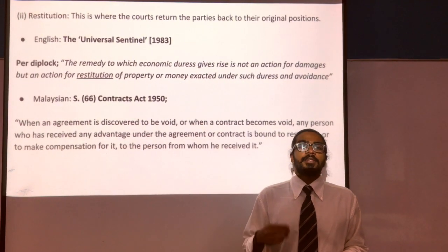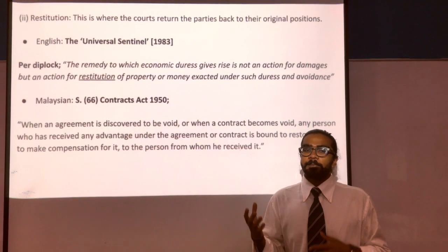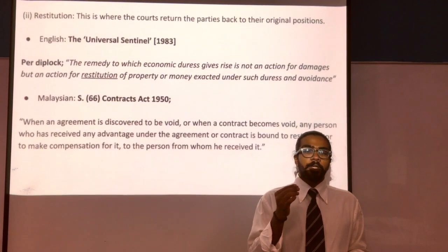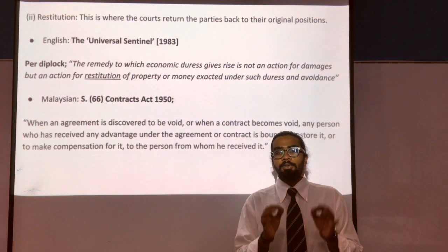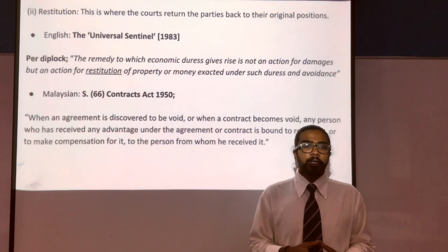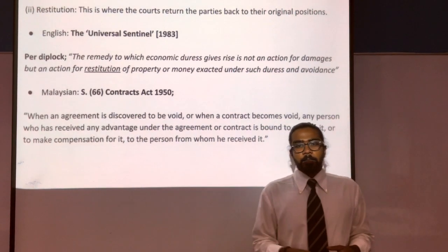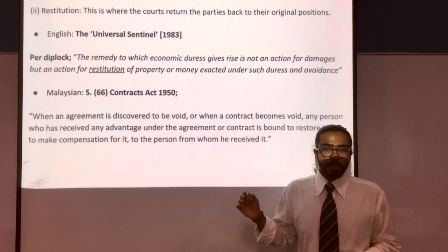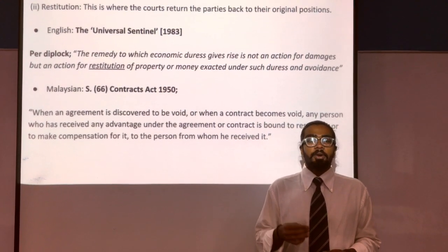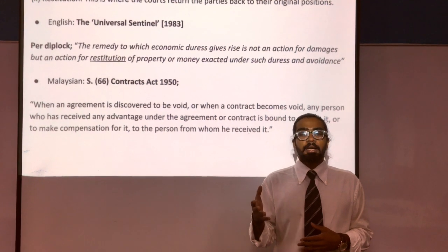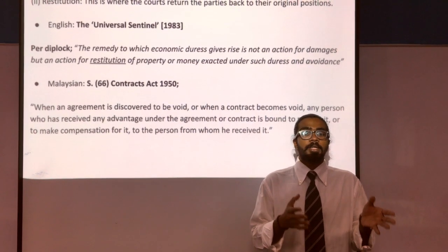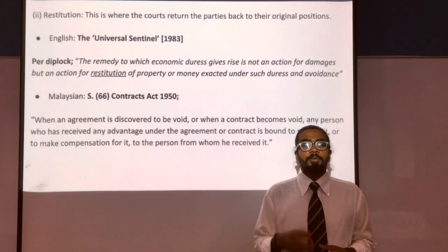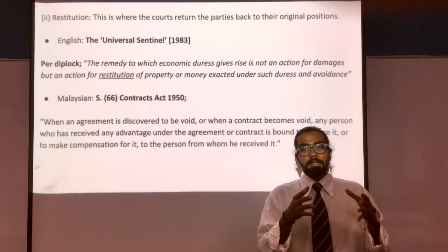The second remedy available is restitution, where the courts try to return the parties to their original positions. In the English case of Universal Sentinel, Lord Diplock stated that the remedy to which economic duress gives rise is not an action for damages, but an action for restitution of property or money exacted under such duress. Similarly, the remedy of restitution is available in Malaysian law under Section 66 of the Contracts Act 1950, where any person who has received any advantage under a void agreement is bound to restore it or make compensation for it.